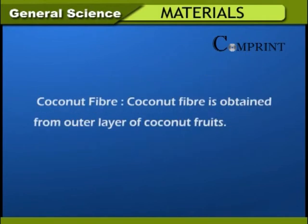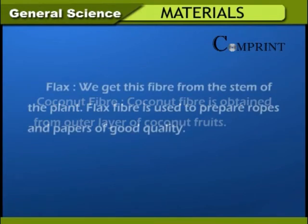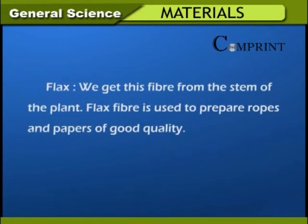Coconut fiber is obtained from the outer layer of the coconut fruit. Flax: We get this fiber from the stem of the plant. Flax fiber is used to prepare ropes and papers of good quality.